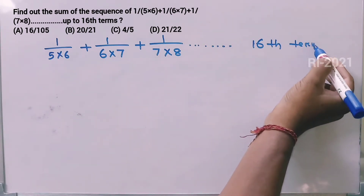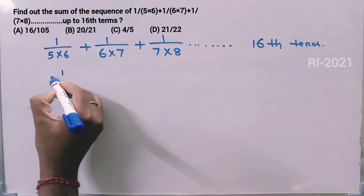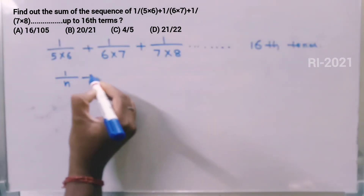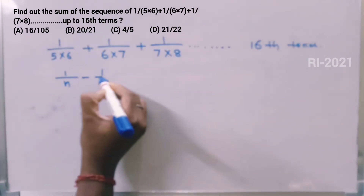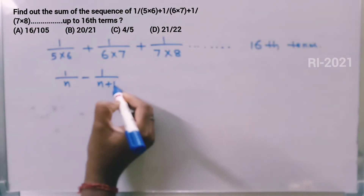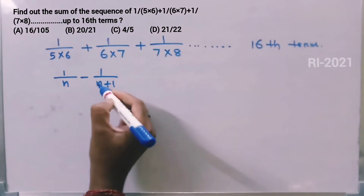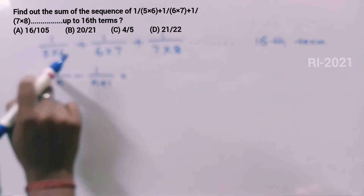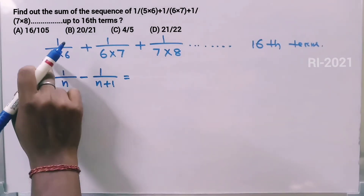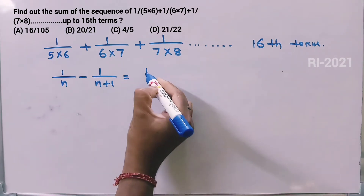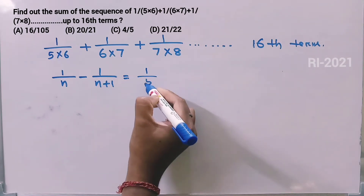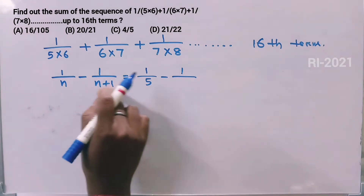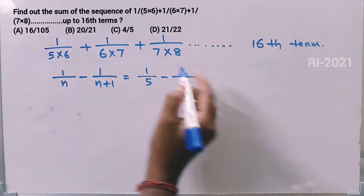We use the partial fraction identity: 1/(n(n+1)) = 1/n - 1/(n+1).